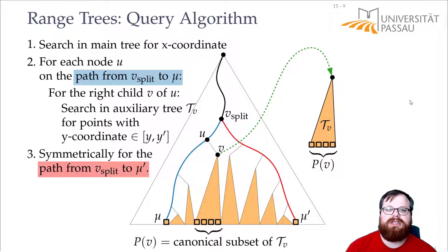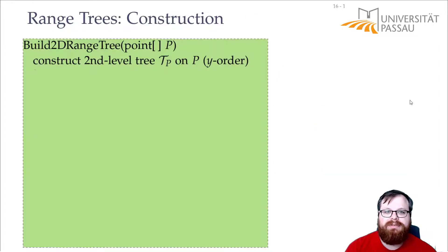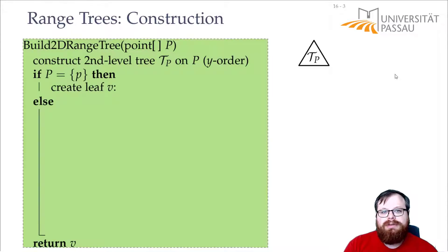Let's try to construct such a range tree. So we again want to write some pseudocode, that is the build2d range tree for some points at p. And for that what we do is first we construct the second level tree on the whole point set. So we construct the tree that contains all the points sorted by y-coordinate. That's the auxiliary tree that we have to attach to the root. Now we want to continue.